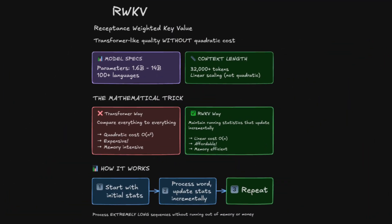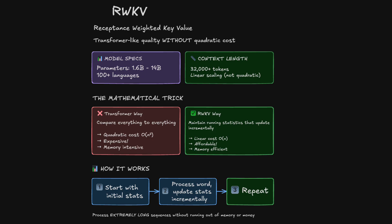RWKV — Receptance Weighted Key Value — is another modern RNN variant that takes a different approach. Models here range from 1.6 billion to 14 billion parameters. It figured out how to get transformer-like quality without the quadratic cost through a mathematical trick. Instead of comparing everything to everything, it maintains running statistics that update incrementally. The practical result is the same: you can process extremely long sequences without running out of memory or money.